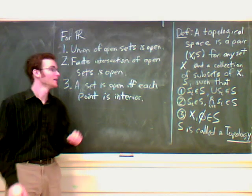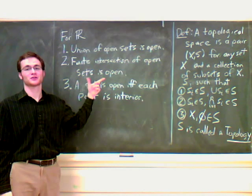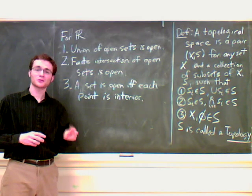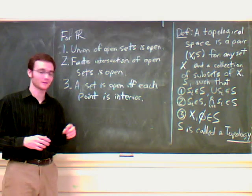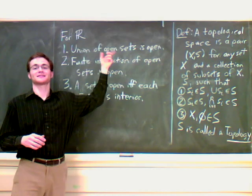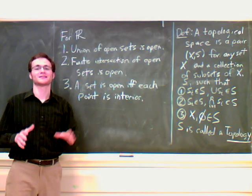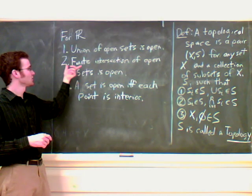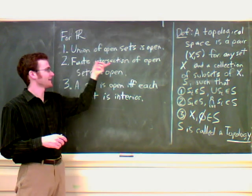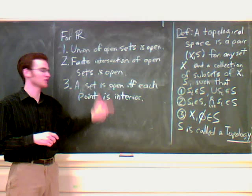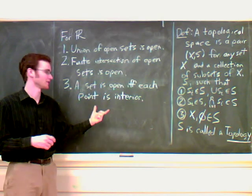To start off, in the introductory lecture we talked about the real line and some interesting properties of it. There were three that we decided were very important. The first is that the union of open sets is open, where we defined open sets to be the union of open intervals. Two, that the finite intersection of open sets is open. And three, a set is open if and only if each point is interior.